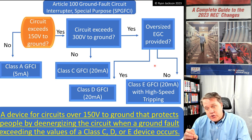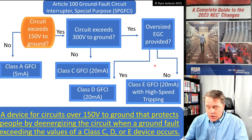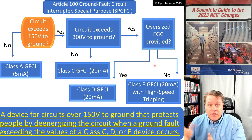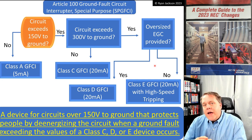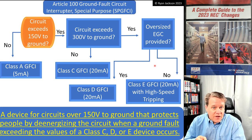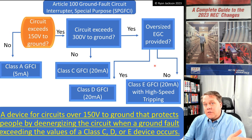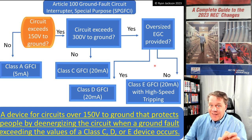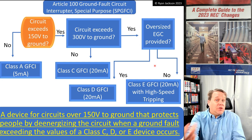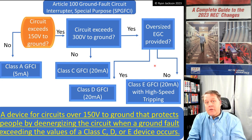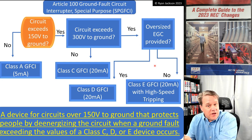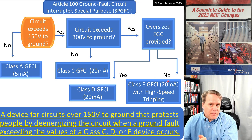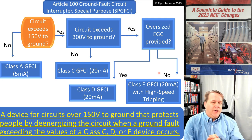When it comes to electric shock, what makes it fatal? It's the amount of current, the frequency of the circuit — 60 Hz and 10,000 Hz affect you differently — and most importantly, the duration of the shock. A GFCI does not limit how much current goes through your body; it limits how long that current flows through your body. It opens at four to six milliamps for Class A, but you can get a 30-milliamp shock for a very short duration. Same principle applies to Class C, D, and E.